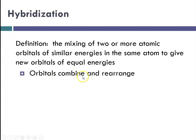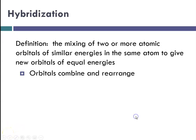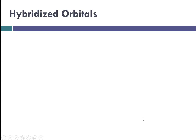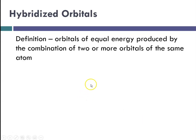Orbitals can combine and rearrange. This allows for the electrons in the orbitals to be far apart from one another, and it has a little bit to do with VSEPR theory as well. When we're talking about these hybridized orbitals, the definition is orbitals of equal energy produced by the combination of two or more orbitals in the same atom.